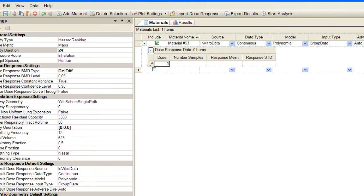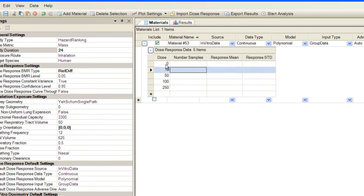For this material, I have doses at 0, 10, 50, 100, and 250 micrograms per milliliter. Each measurement was done in triplicate, so we have three samples at each measurement. I'll type in my measured response means here. And I'll type in my computed response standard deviations here.